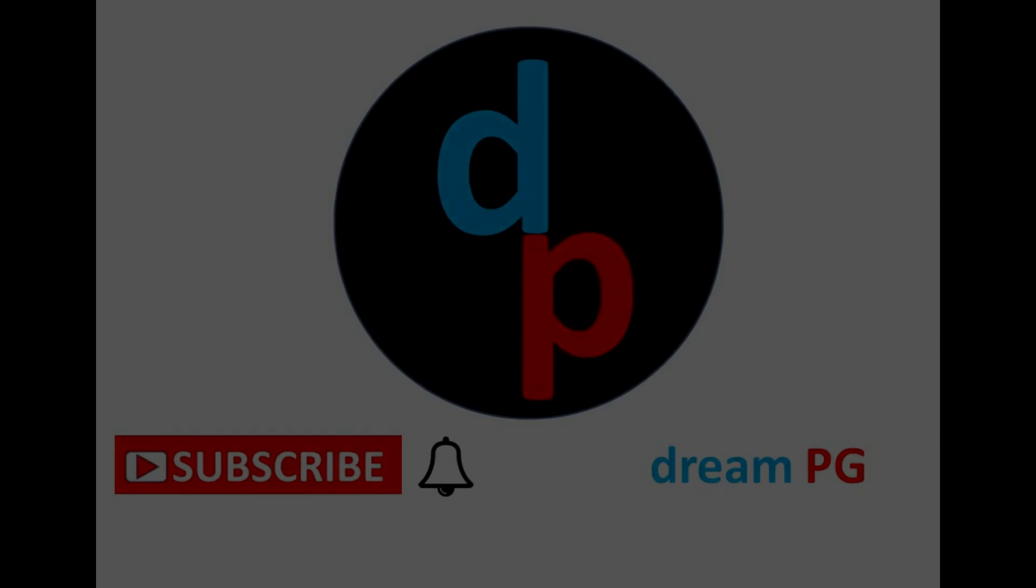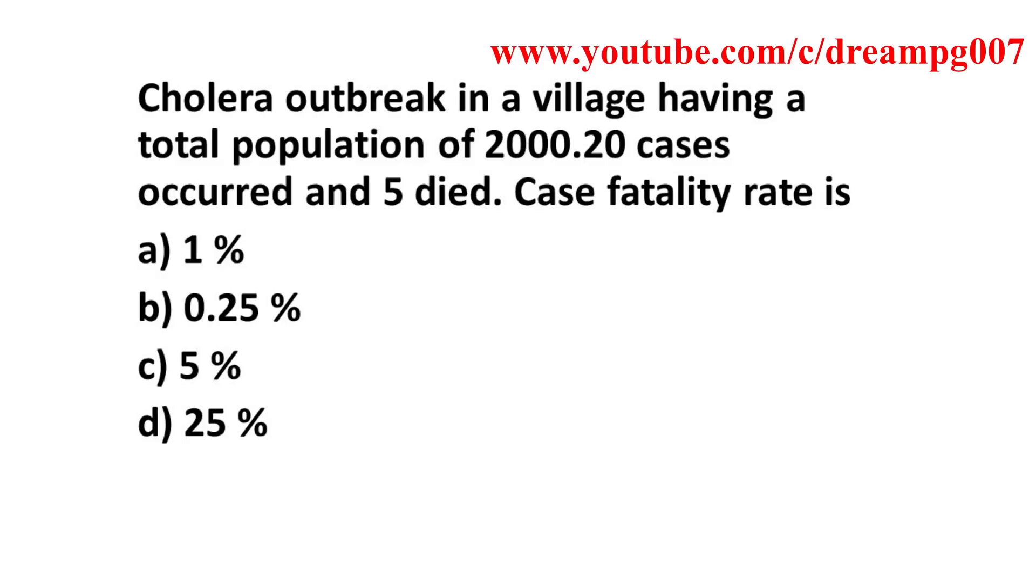There is a cholera outbreak in a village having a total population of 2000. 20 cases occurred and 5 died. What is the case fatality rate? Option A: 1%, Option B: 0.25%, Option C: 5%, Option D: 25%.